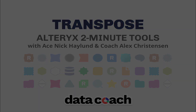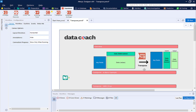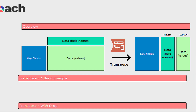Let's jump right in. Take a look at this diagram — it shows what we are trying to do with the transpose tool. We take the names of the columns we want to pivot and make a new column of just those names, and then we have a second column which is the corresponding values for those new names.